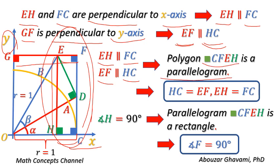In parallelogram CFEH, opposite sides are equal to each other. Therefore, HC equals EF and side EH equals side FC. In parallelogram CFEH, angle H equals 90 degrees. Thus, CFEH is a rectangle, and angle F equals 90 degrees.